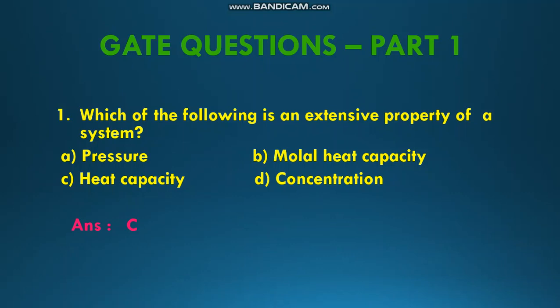The first question is: which of the following is an extensive property of a system? The multiple choices are given as A is pressure, B is molar heat capacity, C is heat capacity, and D is concentration. Extensive property is dependent on the mass of the system, so the answer is given as C, that is heat capacity is the extensive property of the system.